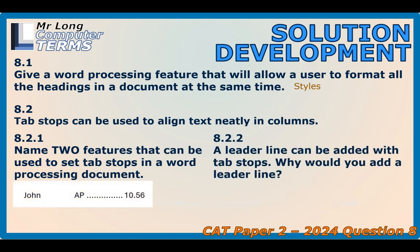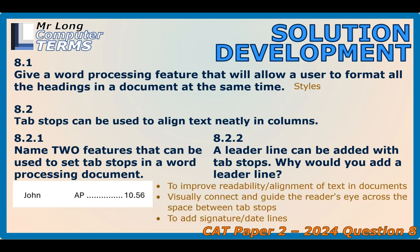Another feature of tabs is the leader line. In the example, there are little dots leading between the item and the number. Why would you add a leader line? It makes it a lot easier to read. If you have lots of items in a list, you can see that AP goes to 10.56 — it improves readability and makes it easier for your eyes to travel across. You can also use it to create dotted lines for signing, printing a document so someone can sign on the dotted line.